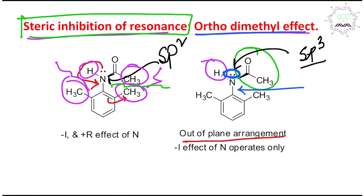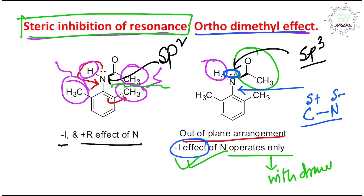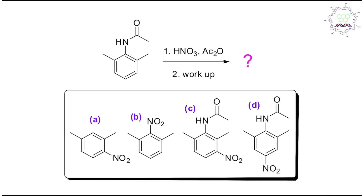Since the nitrogen lone pair cannot delocalize, only the minus-I (inductive) effect of nitrogen operates. Due to the higher electronegativity of nitrogen compared to carbon, nitrogen is delta negative and carbon is delta positive. Normally, nitrogen shows both minus-I and plus-M (resonance) effects, but since plus-M is not possible here, only minus-I operates. This makes nitrogen a withdrawing and meta-directing group — that is why we get selective meta substitution.